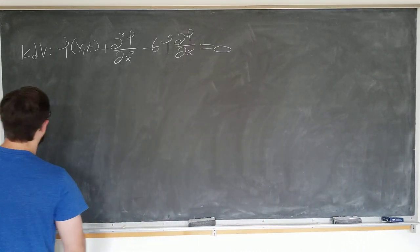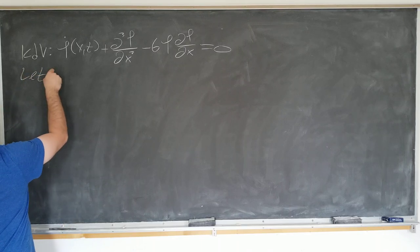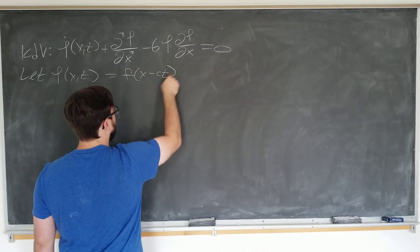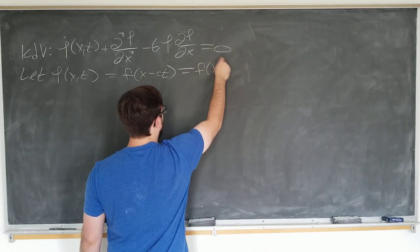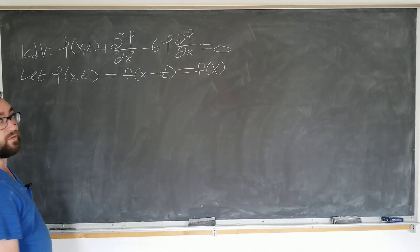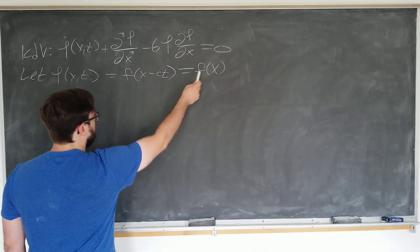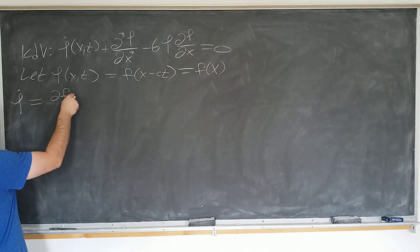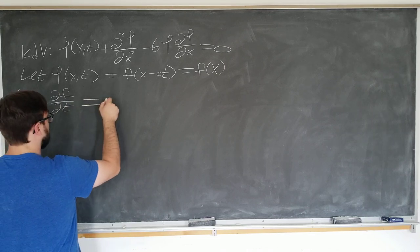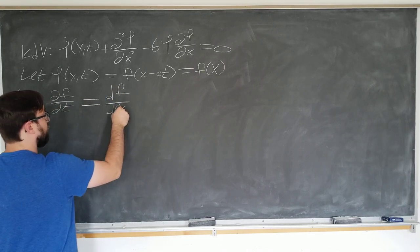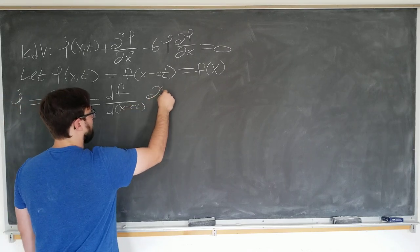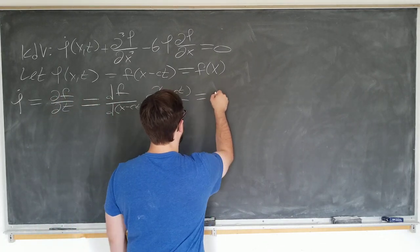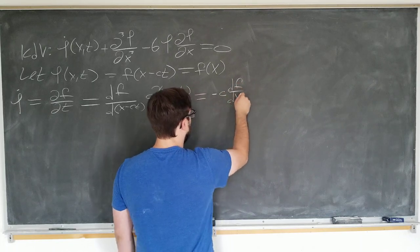Alright, we'll be assuming a plane wave solution, so we're going to be letting psi of x and t to be some function of x minus ct, and we're going to call the argument capital X. All you have to do is transform the partial derivatives into total derivatives. We'll transform psi dot to be partial f by dt, which using the multivariable chain rule, is the total derivative of f with respect to the new variable x minus ct times partial x minus ct by t, which you know is just minus c. This becomes minus c df by our new variable, capital X.